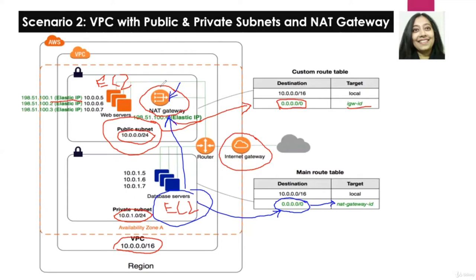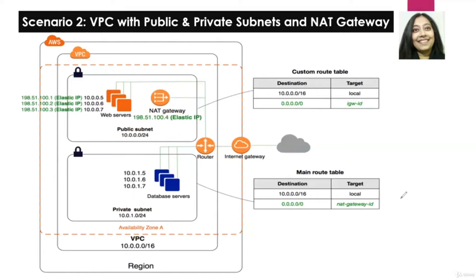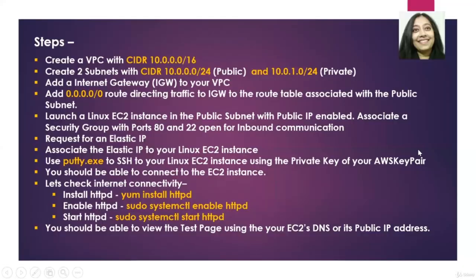I have enlisted all the steps for this tutorial. Feel free to pause the video. The first set of steps covers creating the VPC, the two subnets, directing non-local traffic to the internet gateway, connecting to our EC2 instance, checking internet connectivity by installing HTTPD, enabling and starting it, and testing the test page.